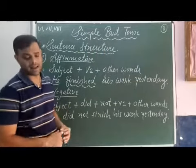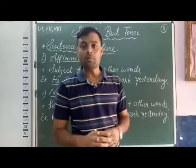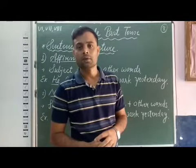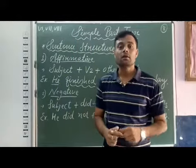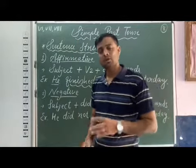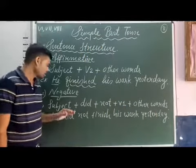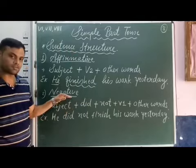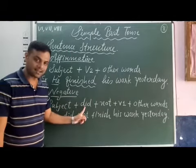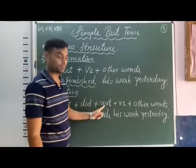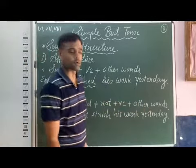The sentence structure for a negative sentence is: Subject + did + not + V1 + other words + full stop. In the affirmative sentence we use V2, but in the negative sentence we use the helping verb 'did', followed by 'not', and then V1.